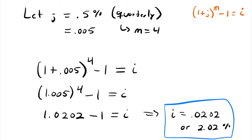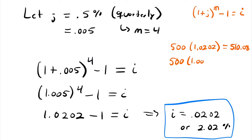For example, if I deposited $500 into an account for one year and multiplied by 1 plus the annual effective rate, I'd have 1.0202 times $500, which equals $510.08. But if I used the quarterly account compounding at 0.5% — that's 1.005 to the fourth power times $500 — I'd also get $510.08. Because both give the same accumulation at the end of one year, we call these equivalent rates of interest.